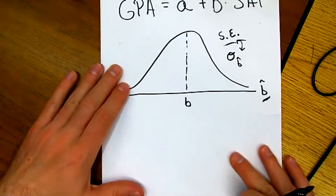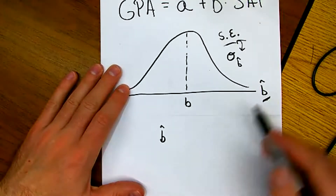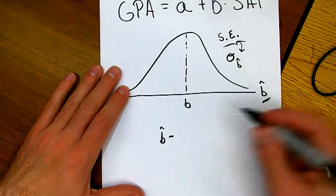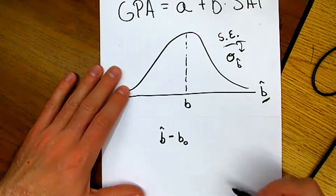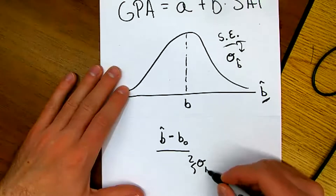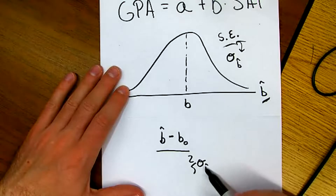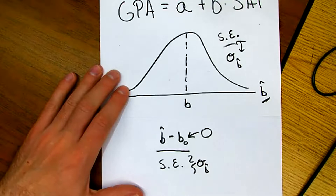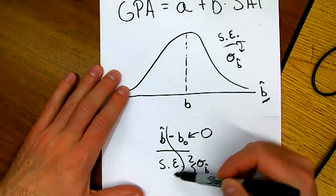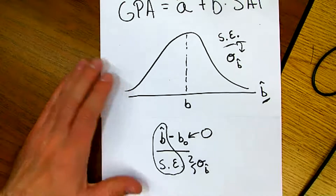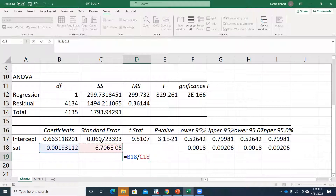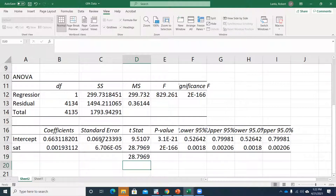I can create a test statistic: take the sample slope coefficient estimate, subtract the assumed true slope value, and divide by the standard error. We're always going to use an assumed true slope of zero, because I'm always starting out assuming there's no relationship — what I'm trying to find is that there is some relationship, that the slope is something other than zero. So the test statistic is simply: coefficient divided by standard error.